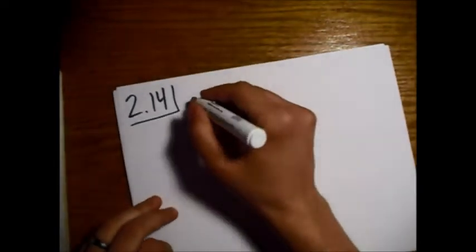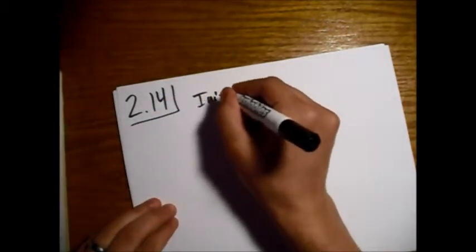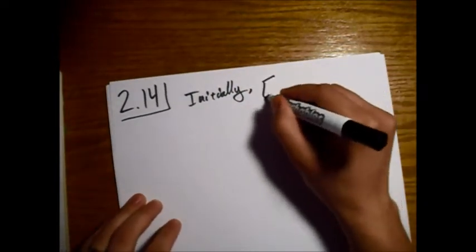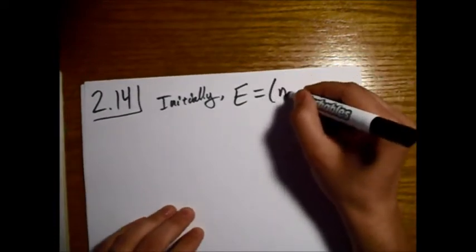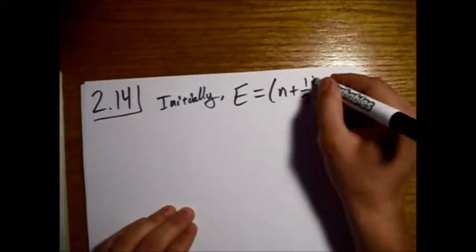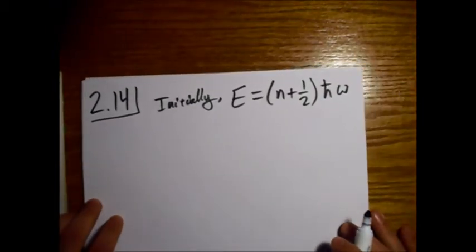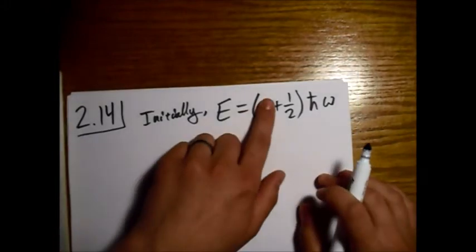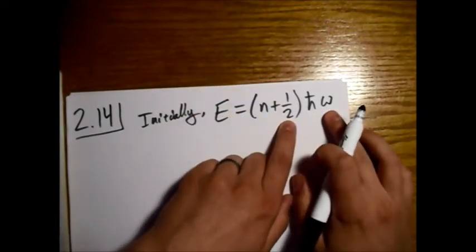So initially, we have energy that comes in steps like this, n plus one-half h-bar omega. And so there is a probability, if we're in the ground state and n equals zero, of getting h-bar omega over 2.